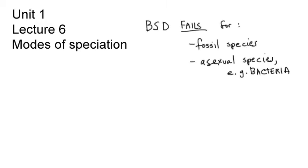Let's start where we left off in the last lecture, noting that the biological species definition is often impractical. For example, you can't use it to define species known only from fossils. And you also can't use it for asexual life forms, and this includes bacteria, which are the most abundant form of life on the planet.